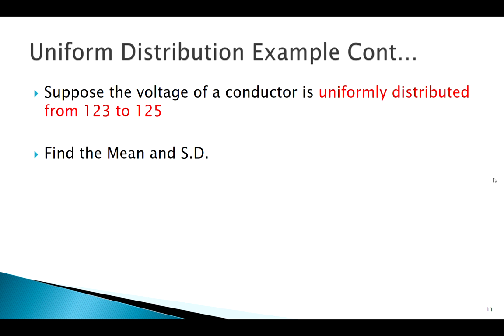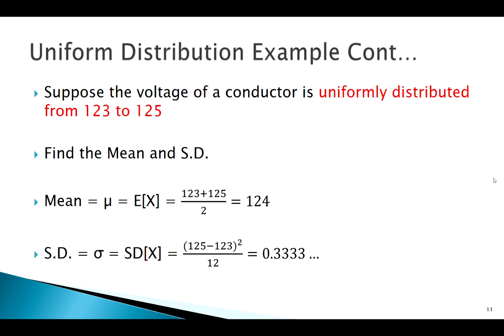The last thing we might want to do with the uniform is to find our mean and standard deviation. We have nice, easy formulas. The mean is just the midpoint here. Plugging in, I get my mean is 124. My standard deviation is one-third, or 0.333 repeating.